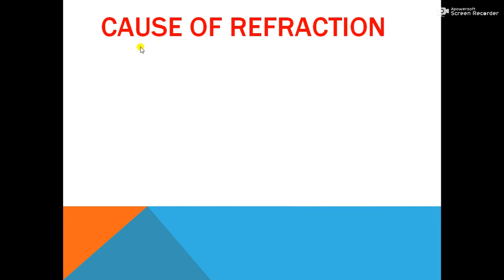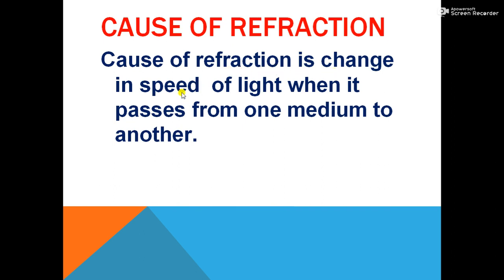What is the cause of refraction? The cause of refraction is the change in speed of light when it passes from one medium to another, because of the difference in optical density of the media. In an optically denser medium, light speeds down; in an optically rarer medium, light speeds up — and because of that, there is a bending of light. Change in speed of light is the cause of refraction. This is very important for board exams.